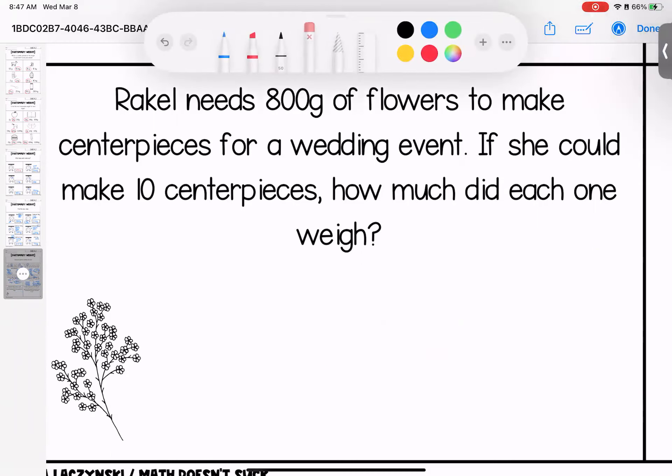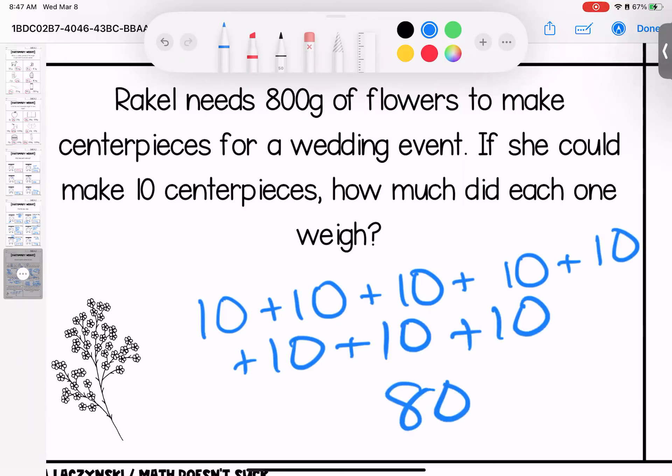10, 20, 30, 40, 50, 60, 70, 80, 100. So think to yourself, how many 10s are in 100? There's 10. If I need 800, I can also do addition. 10 plus 10 plus 10. If I do this eight times, I'm going to end up with my answer. 10, 20, 30, 40, 50, 60, 70, 80. 80 grams is going to be the weight of each centerpiece.